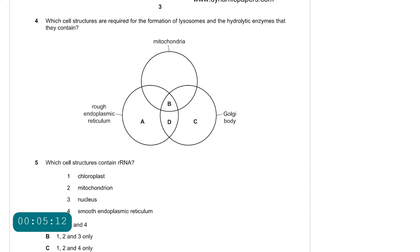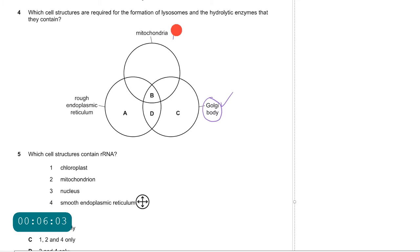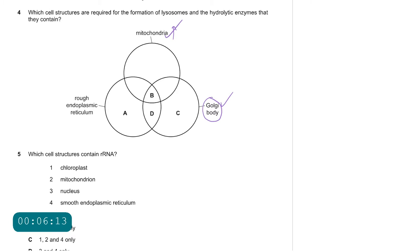Question number 4: which cell structures are required for the formation of lysosomes and the hydrolytic enzymes they contain? Hydrolytic enzymes are proteins, and proteins are modified and packaged inside the Golgi body — so the Golgi body is correct. To synthesize the polypeptide chain we need a high proportion of ATP, requiring mitochondria. The rough endoplasmic reticulum is also correct because it contains ribosomes where polypeptides are synthesized. Answer is B.